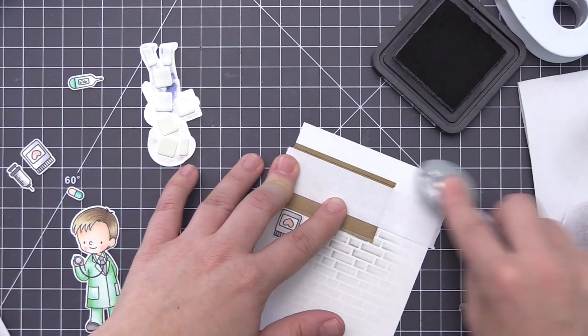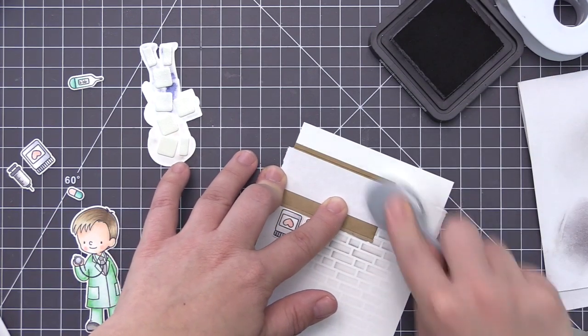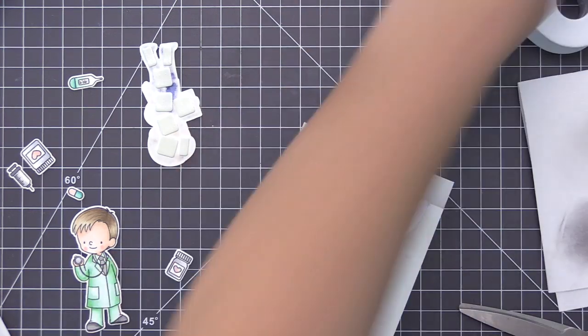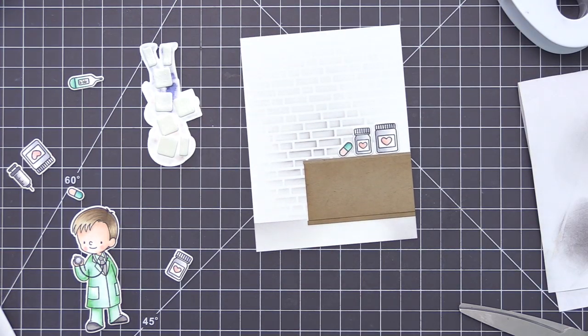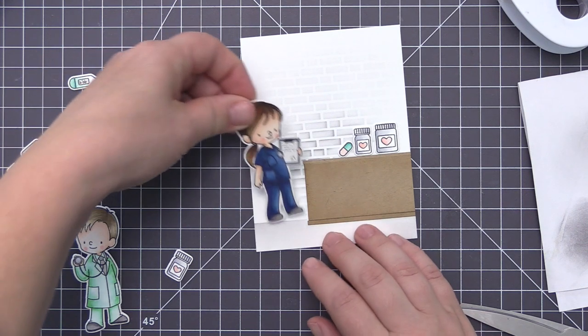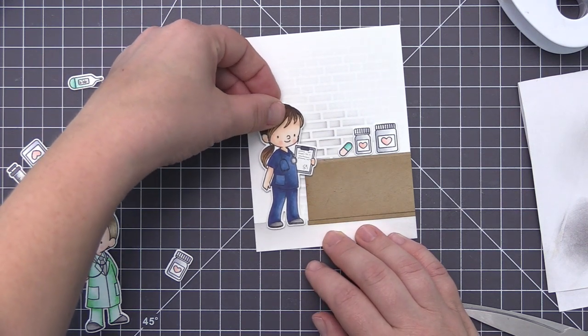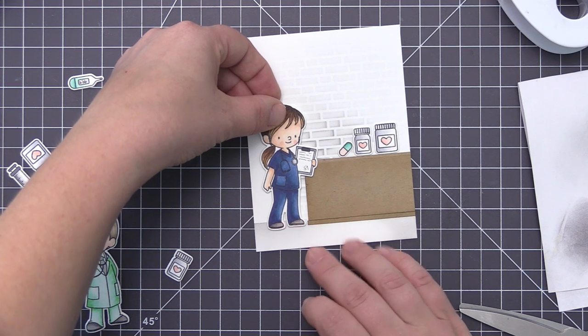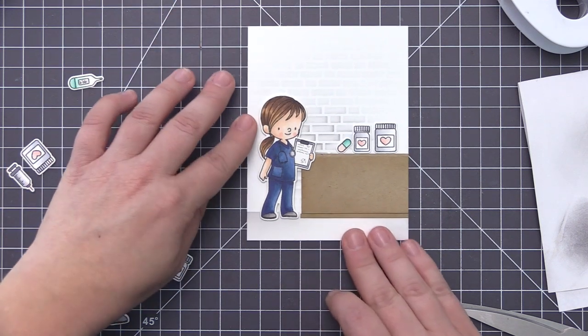Now you can see there I do have the foam adhesive on her, but I realized I needed a floor to ground her, so I put a piece of post-it tape across the bottom and I just created a shadowed line there that's going to make it look like she's actually standing on a floor. Once I had that done, I was good to go, and I just added her right on there. Like I mentioned, she does have foam adhesive on her, so she has a little bit of dimension on the card front.